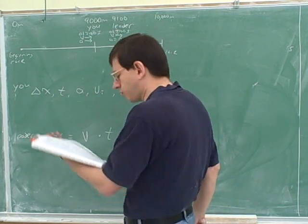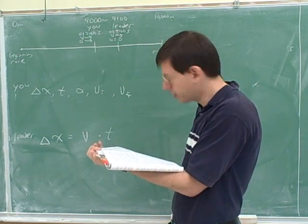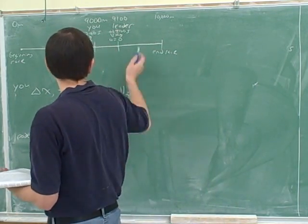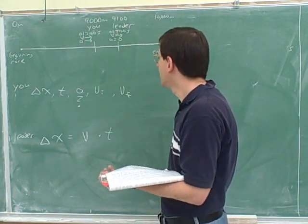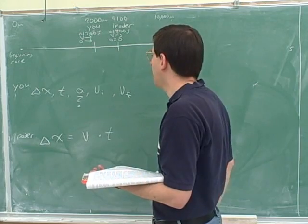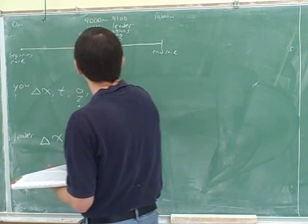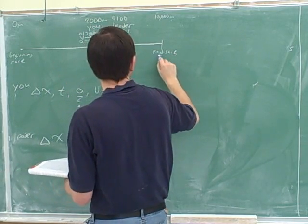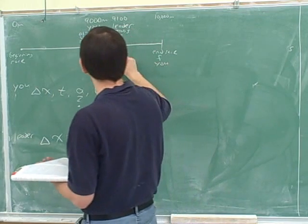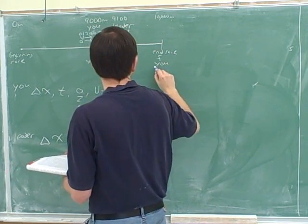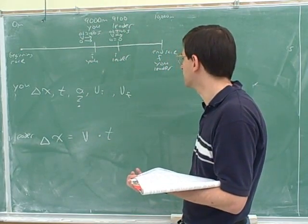What is the question asking us for? Acceleration — specifically your acceleration, not the leader's, since we already know the leader's is zero. Your initial point is here, your final point is here, and similarly we identify the initial and final points for the leader. We try to build as much information as we can into the sketch.